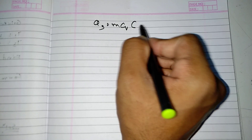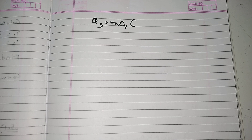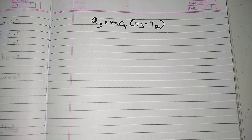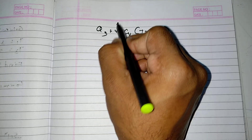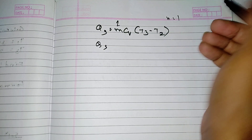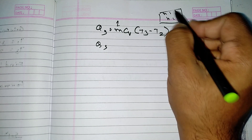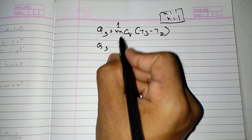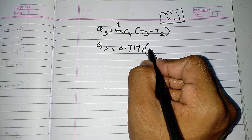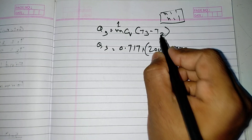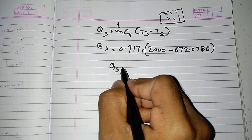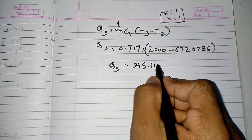Now we calculate the heat supplied. QS = M × CV × ΔT = M × CV × (T3 - T2). Considering M = 1 kg, CV = 0.717 kJ/kg·K, T3 = 2000 K, and T2 = 672.03 K, we get QS = 0.717 × (2000 - 672.03) = 0.717 × 1327.97 = 945.12 kJ/kg.